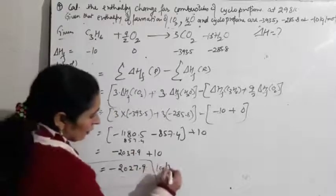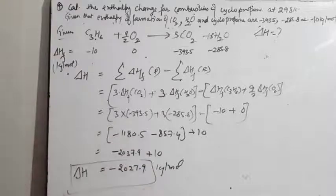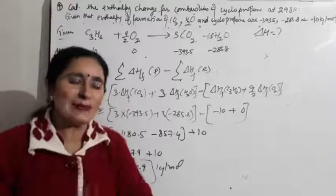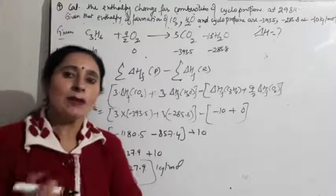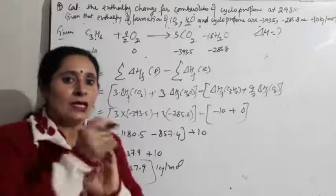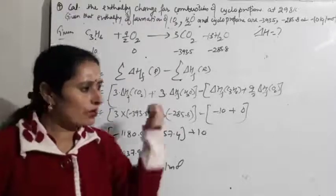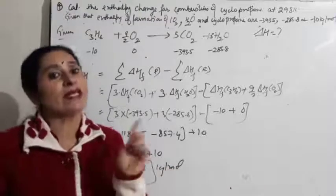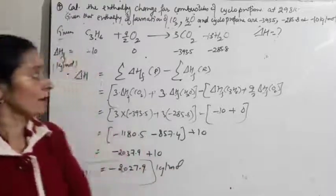So delta H for combustion of cyclopropane = −2027.9 kJ/mol. These Hess's Law numericals are quite straightforward. Now since we've been talking about enthalpies, let me also do some bond energy numericals.